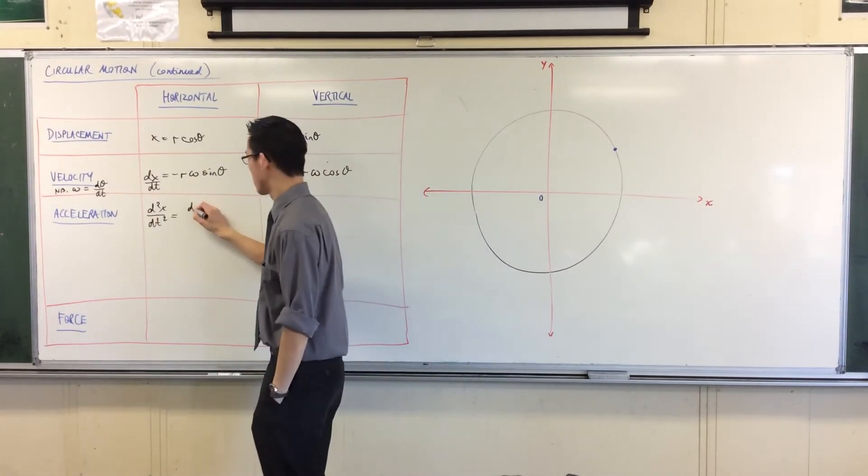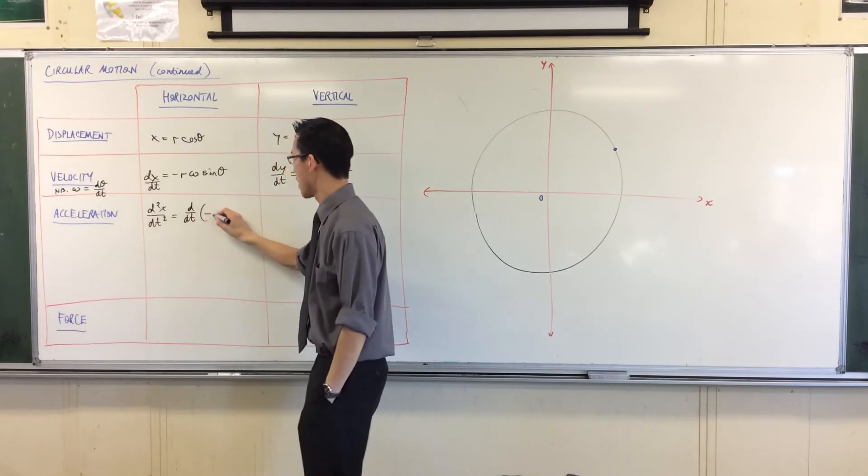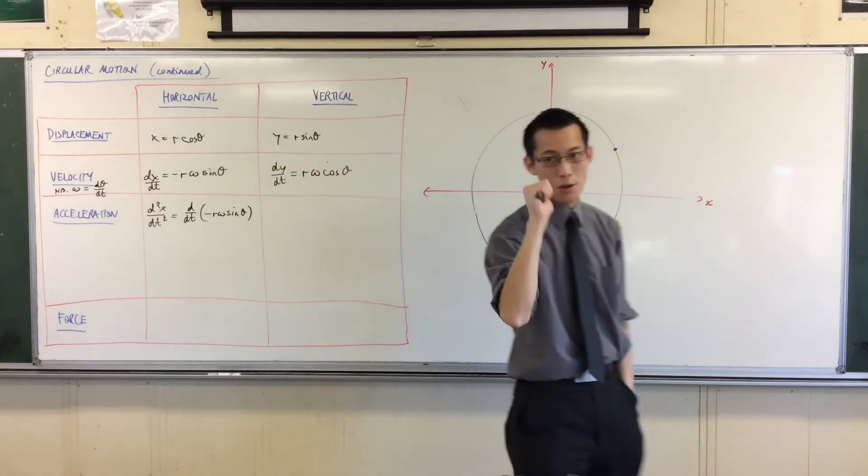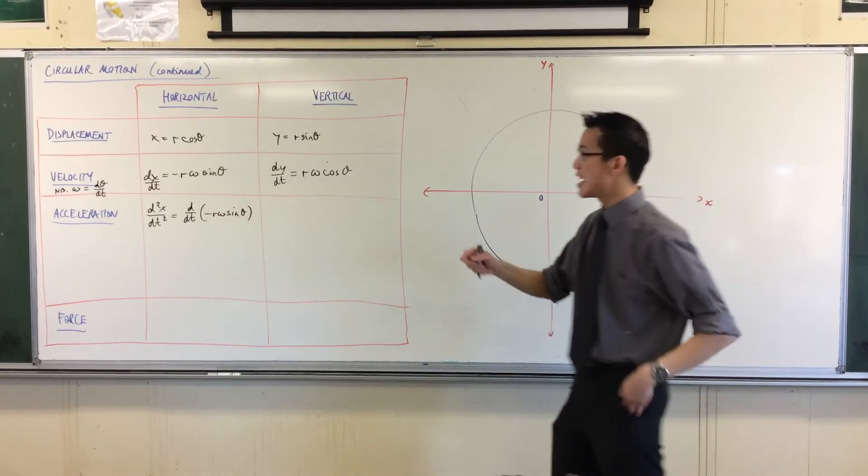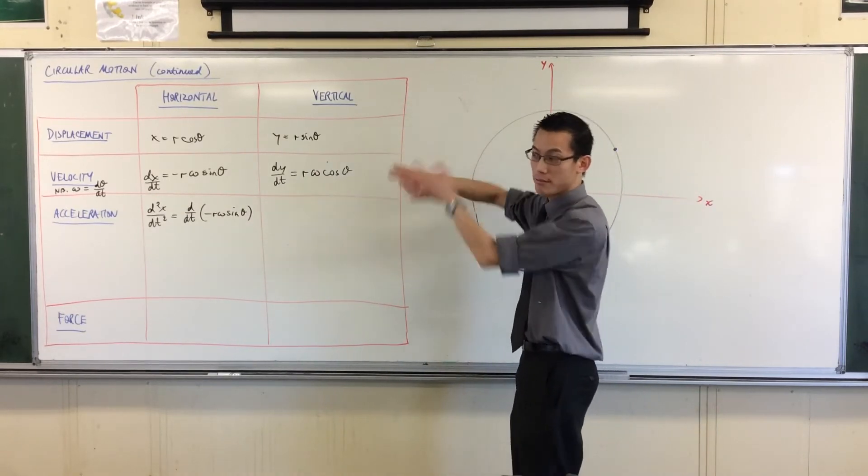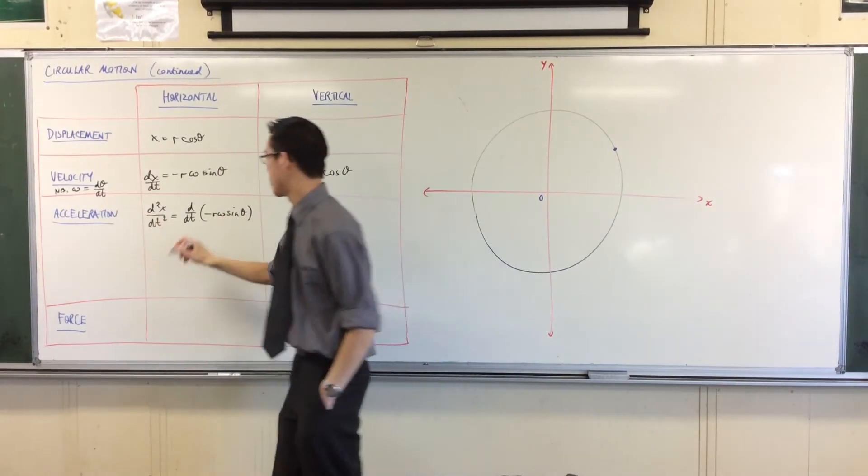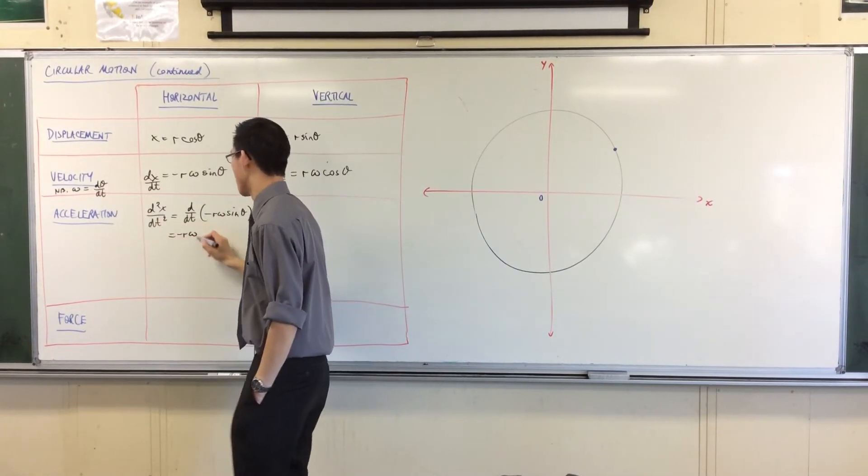So, it's just the derivative of this, derivative with respect to time of minus R omega sin theta, right? The radius and the angular velocity in uniform circular motion, that's what this is all about, they're both constants, so I'm just going to rip them out the front. Minus R omega, okay?